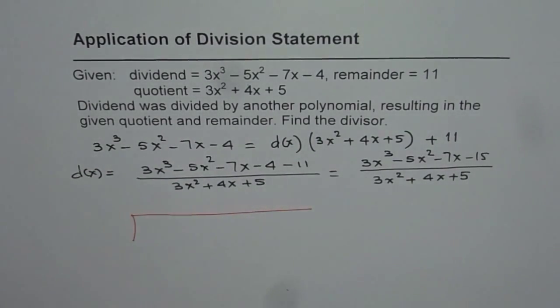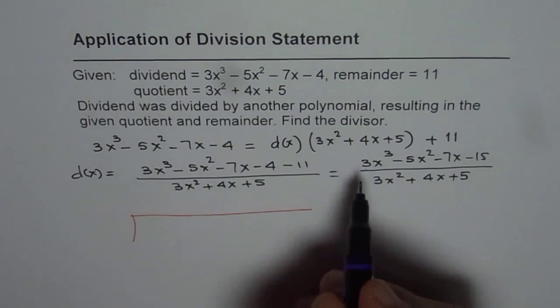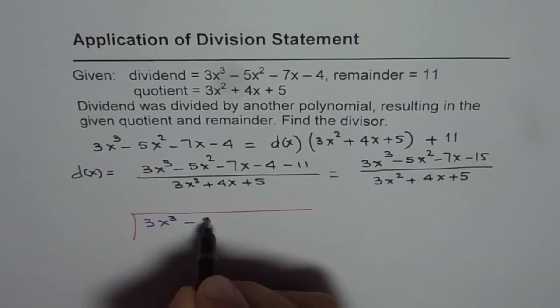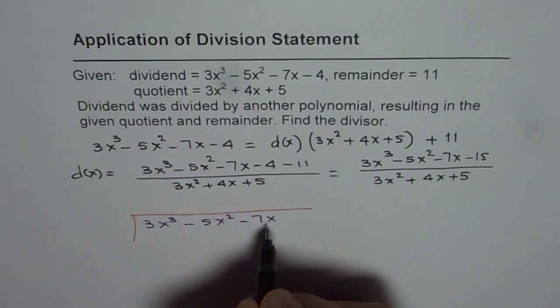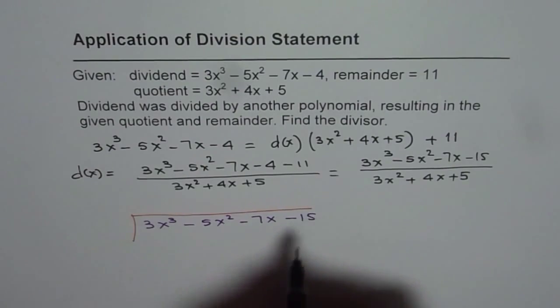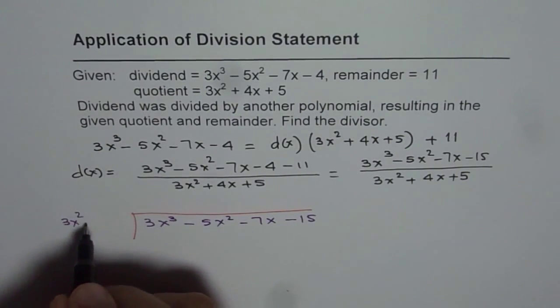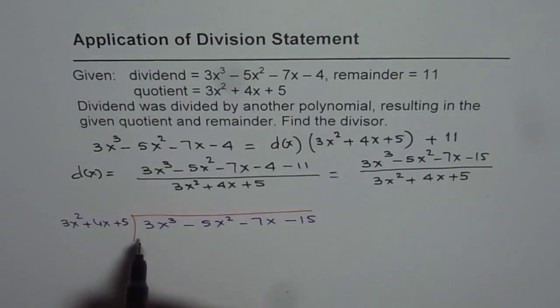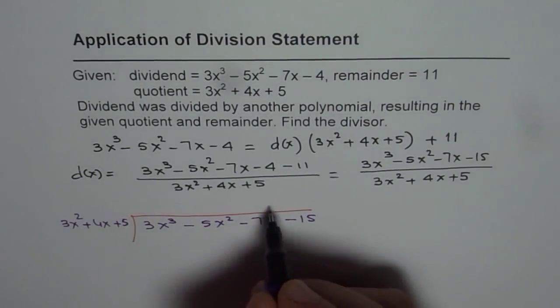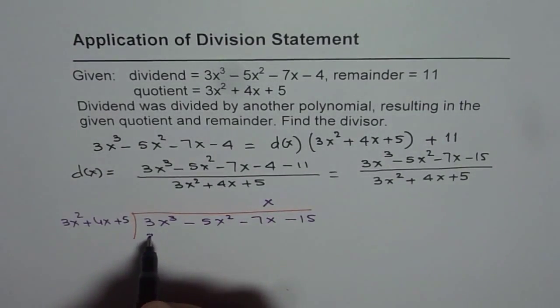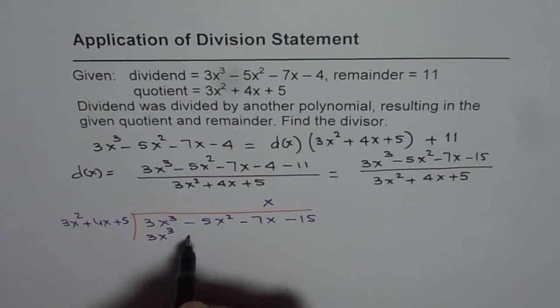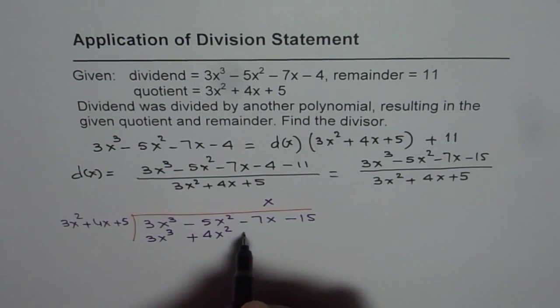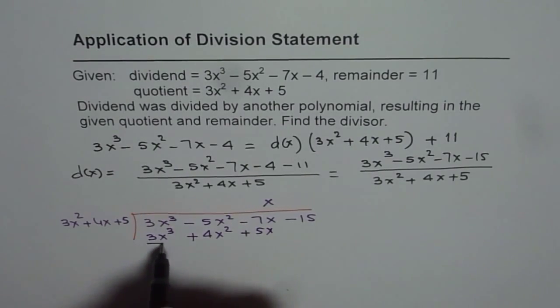Let me use a different ink. We have 3x cube minus 5x square minus 7x minus 15 and here we have 3x square plus 4x plus 5. So we need to multiply by x. So if I multiply by x, we get 3x cube plus 4x square plus 5x.